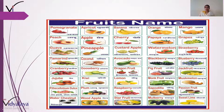Wood apple, yaani bel phal. Banana, yaani kela. Cherry. Custard apple, yaani sitaphal ya sharifa. Avocado, yaani makkhan phal. Dragon fruit — yeh bhi ek videshi phal hai. Lemon, yaani nimbu.